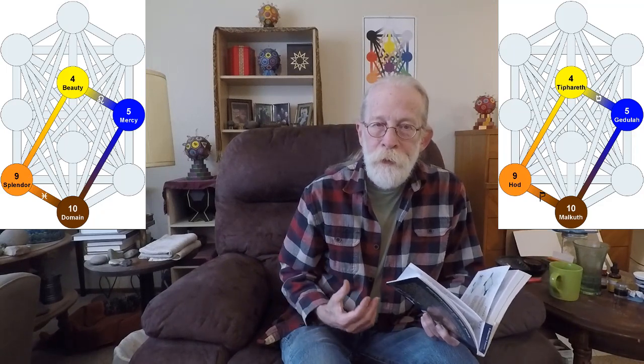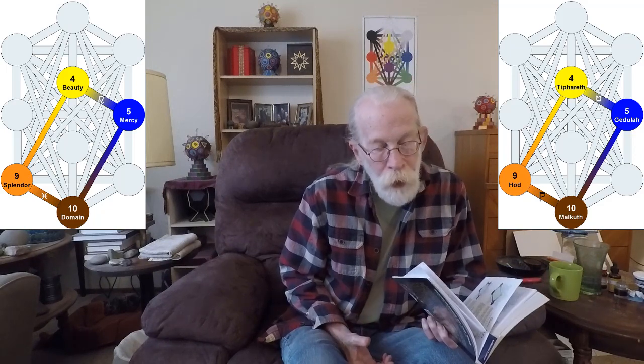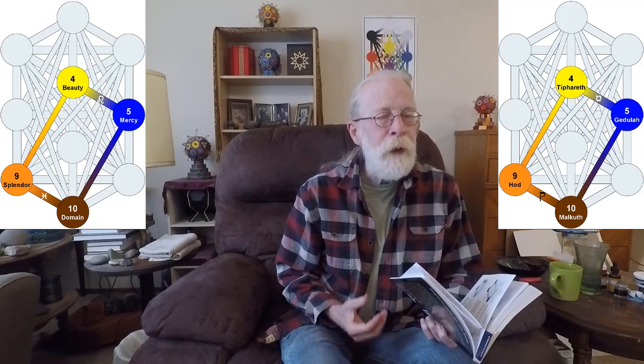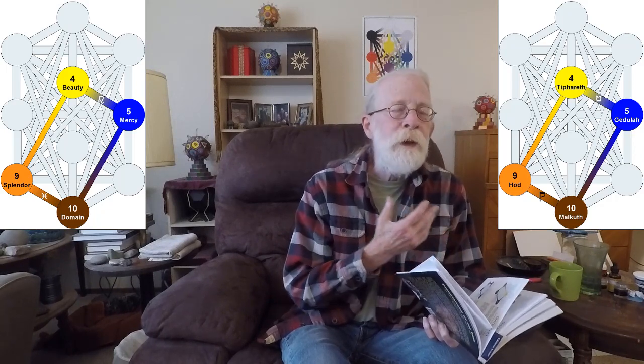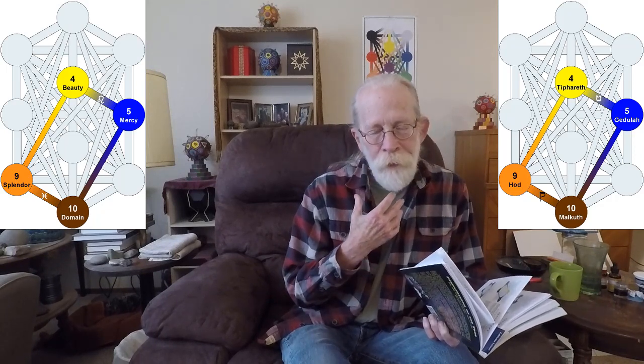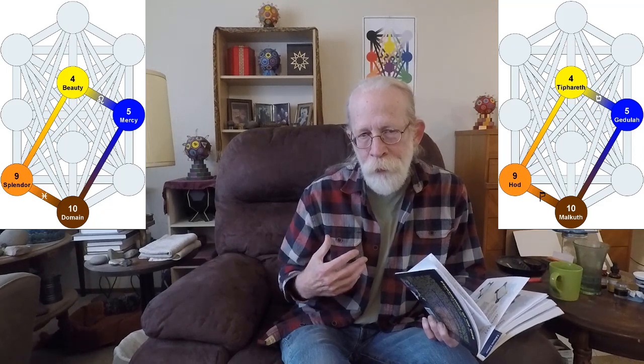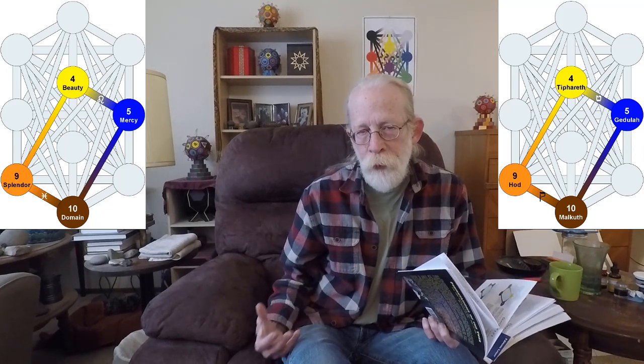Along Pisces to Malkuth, up that hidden path to Gedjula, up the path of Leo to Tiferet, and then down the hidden path from Tiferet to Hod.